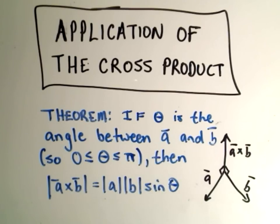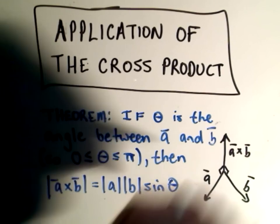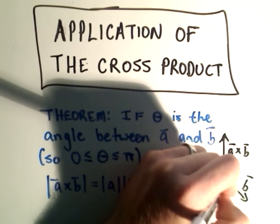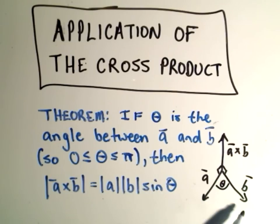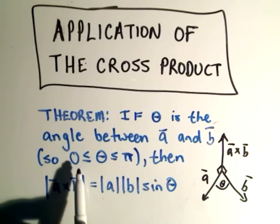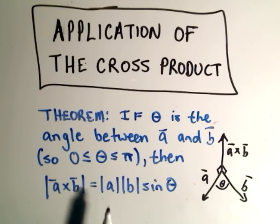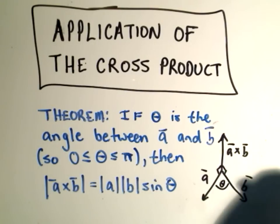In this video, I'm going to talk about an application of the cross product. What we're going to do is talk about finding the magnitude, or the length, of the cross product. The theorem says: if theta is the angle between vector A and vector B — and this is an angle inclusive between 0 and pi — the magnitude of that cross product equals the magnitude of A times the magnitude of B times sine theta.